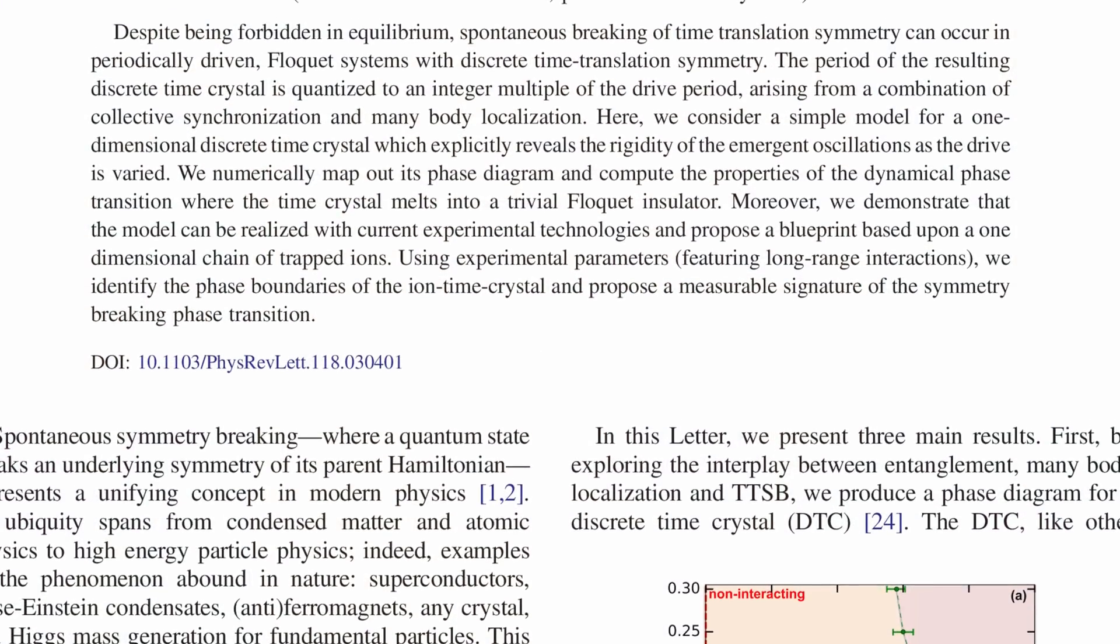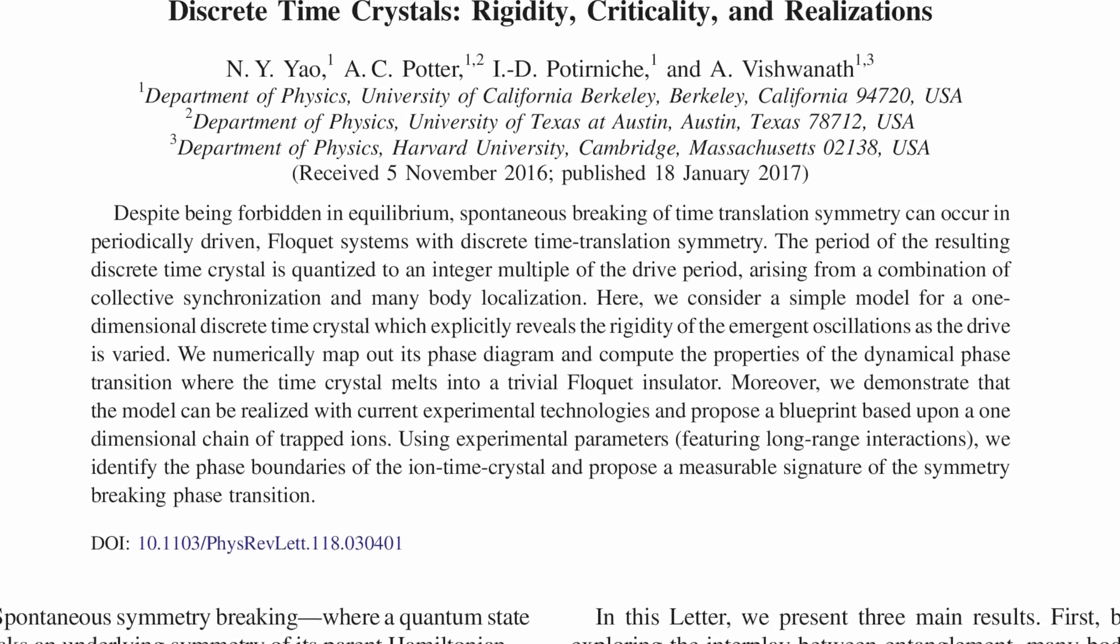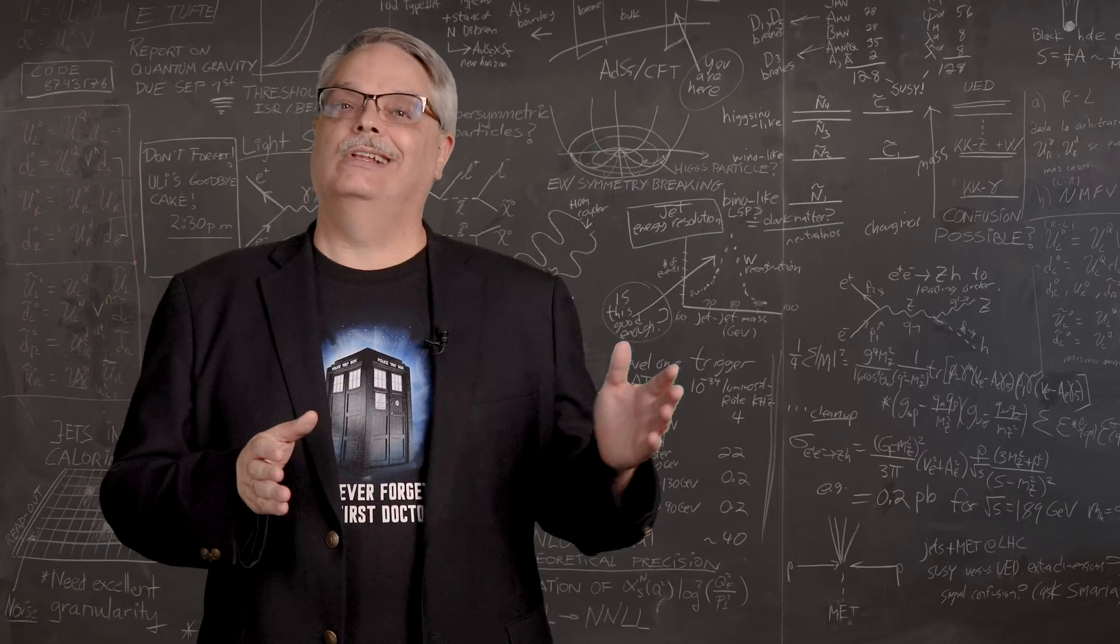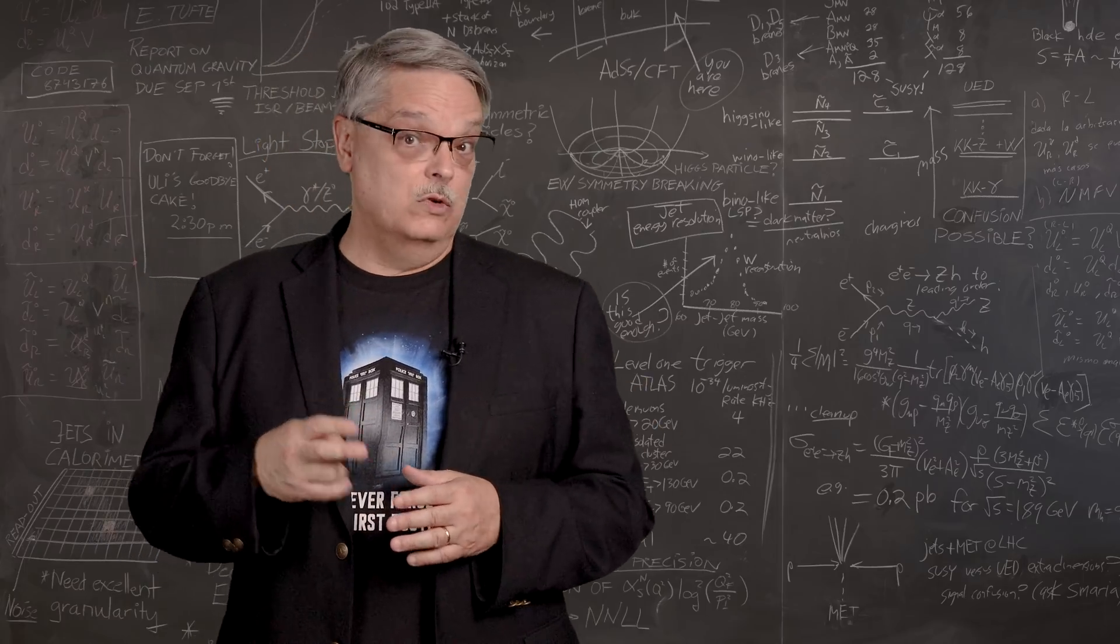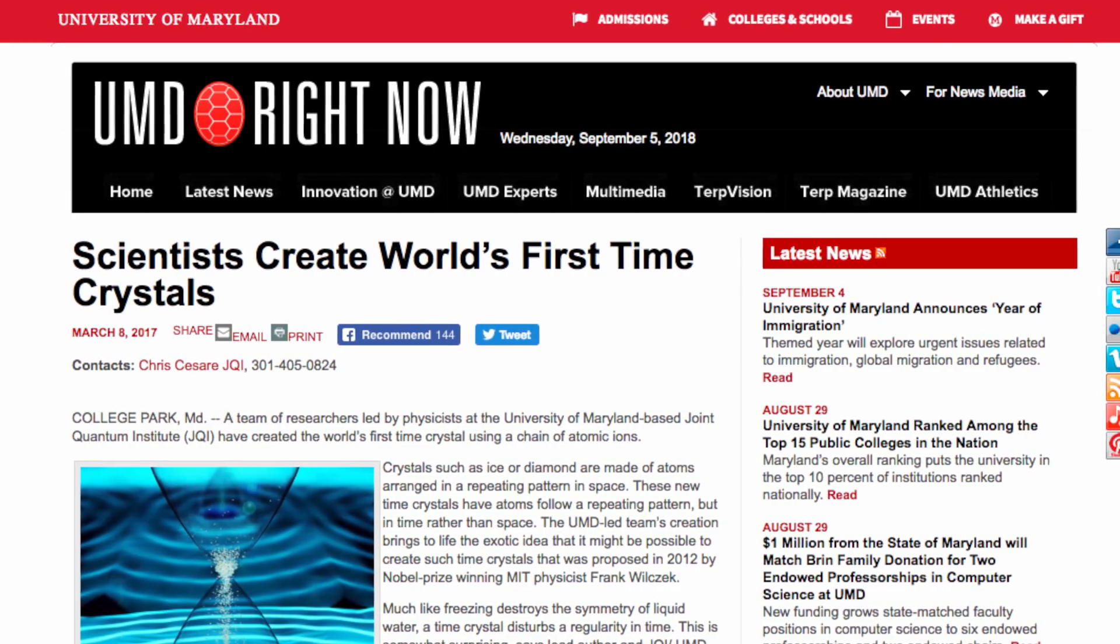In 2017, physicist Norman Yao and his collaborators published a paper called Discrete Time Crystals – Rigidity, Criticality, and Realizations, which described how to make a time crystal. And then the challenge was on. Since then, two groups, one at Harvard and one at the University of Maryland, have made time crystals.